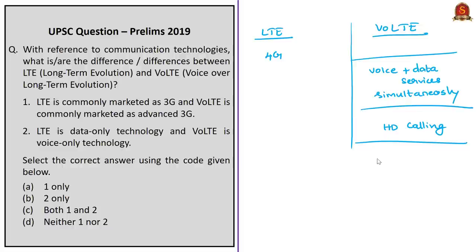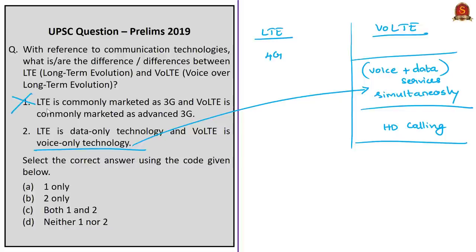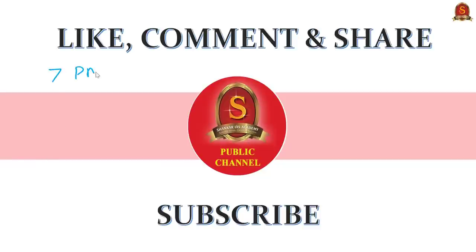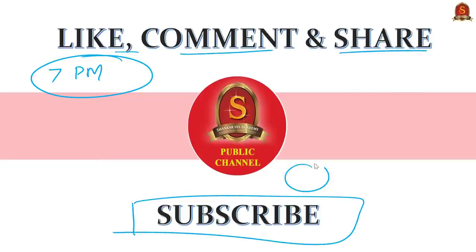VoLTE is now most widely used and preferred. The second statement — 'LTE is data-only technology and VoLTE is voice-only technology' — is also incorrect, as while LTE could be stated as data-only, VoLTE is a voice-come-data technology, not voice-only. Therefore, the correct answer for this question is option D — neither of the statements are correct. We have given you two practice mains questions. You may write the answers and post them in the comment section. This brings us to the end of today's The Hindu News Analysis, and by 7 p.m. we will be having the essay paper discussion. If you like the video, click the like button, comment, share, and subscribe to Shankar IAS Academy's YouTube channel for more updates and content on civil service exam preparation. Thank you.